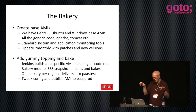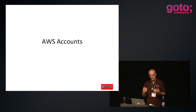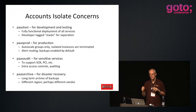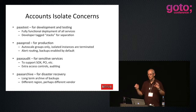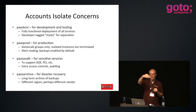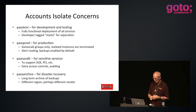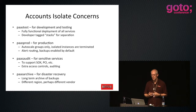For accounts, we isolate concerns with each account. We have a test account for development and testing. We have a tagging mechanism so an individual developer can say I want these two or three services to be my special version, but the rest of these 300 different services I'll use the generic ones - that gives us a way to flow traffic through a purpose-built stack with a few hundred developers sharing this environment. In production, it's auto-scale groups only - there are no isolated instances.